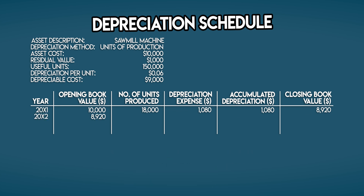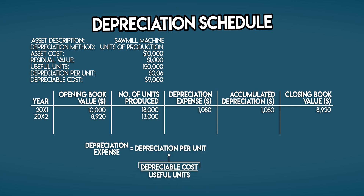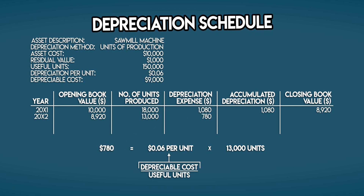This then becomes your opening book value for year two. Let's say it's a slow year and you only managed to produce 13,000 units of timber. Again, your depreciation expense is depreciation per unit multiplied by units produced: $0.06 × 13,000 = $780. Your accumulated depreciation is the cumulative total of $1,860, and your closing book value is $8,920 minus $780, which is $8,140.